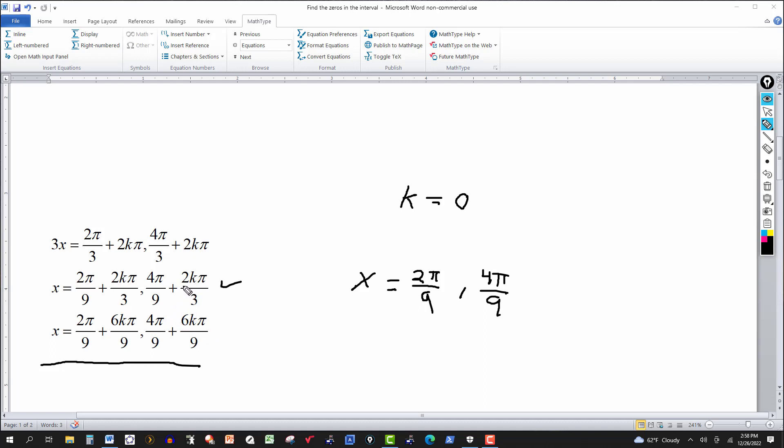So what happens if k is equal to 1? For the first one, k is equal to 1, I get 2π over 9 plus 6π over 9, that's 8π over 9. Is that in the appropriate interval? So 8π over 9 is less than π, so it falls in that interval. And for the second part here, k is equal to 1, that gives me 4π plus 6π, that's going to give me 10π over 9. You can see that's larger than π. 9 goes into 10 once, so that's going to be 1π plus 1 ninth of π. So that's larger. So we can stop there, because we want to stay—they want these zeros in the interval from 0 to π.